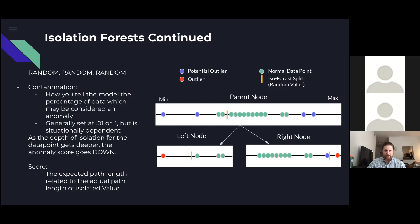As you can see from the graphic on the right, the parent node has a range of data points and chooses a random value within that range to split the data further and further down the tree.